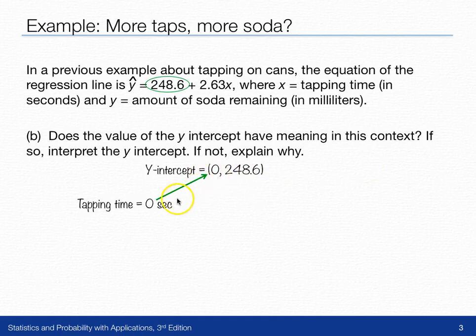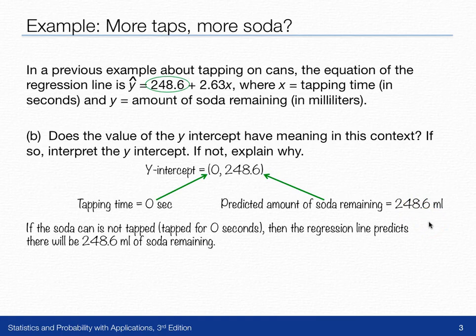Well, the 0 means that the tapping time, x, was 0. And the 248.6 means the predicted amount of soda remaining was 248.6 at that point. And so we can say that if the can isn't tapped, so 0 seconds of tapping time, then the regression line is going to predict that there will be 248.6 milliliters of soda remaining in the can.